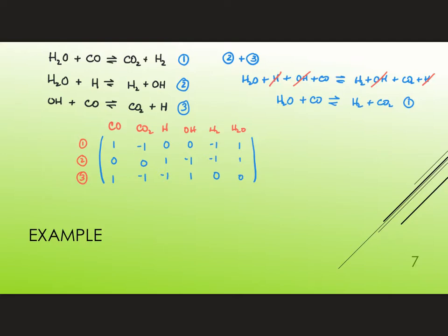But so for reaction 1, I have on the reactant side, I have H2O and CO. So those both have a positive 1. And on the product side, I have CO2 and H2, and so I gave those a negative 1. Now, you could have switched the signs to being negative for reactants and positive for products. As long as you're consistent, it doesn't really matter. And then hydrogen and OH do not appear in this reaction, so they have a zero. And I did that for each reaction.